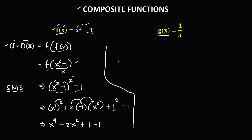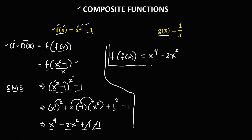Then simplify by combining like terms. We copy x to the power 4, then negative 2x squared, and positive 1 minus 1 equals 0. So therefore, the value of f of f of x is x to the power 4 minus 2x squared.